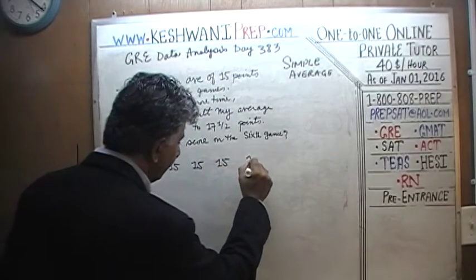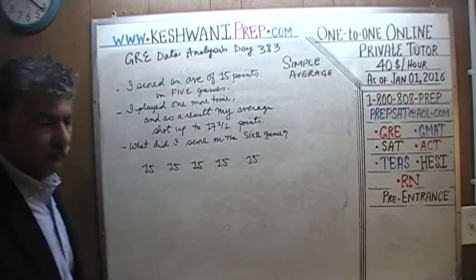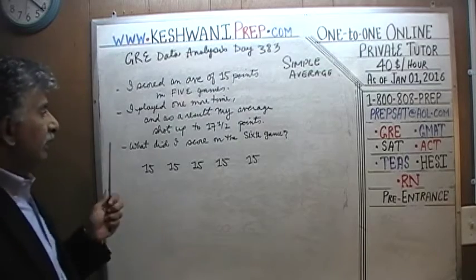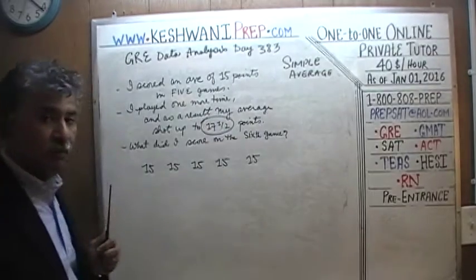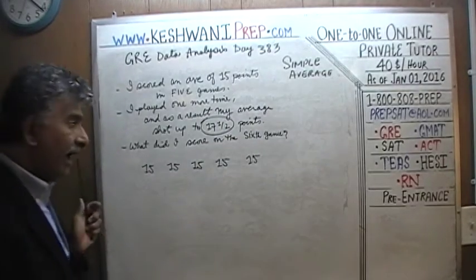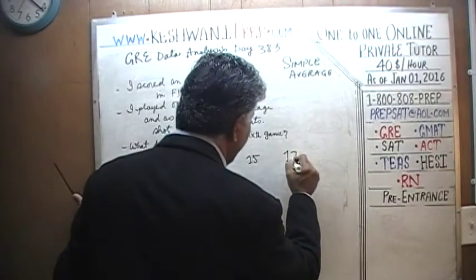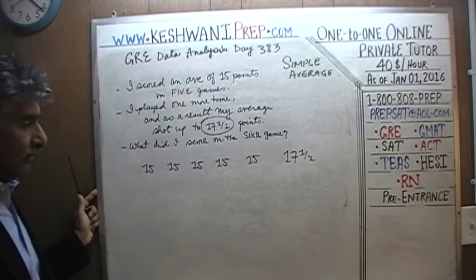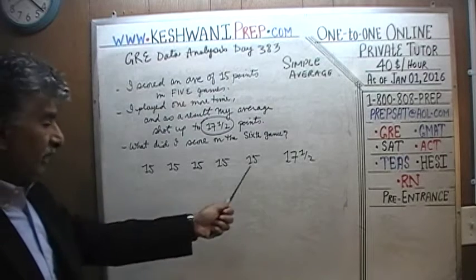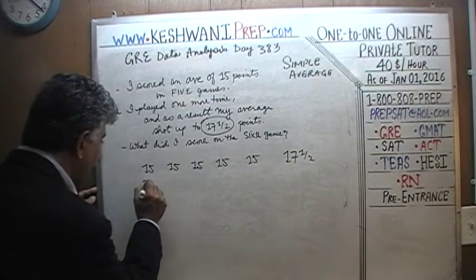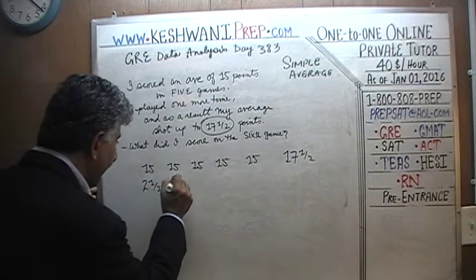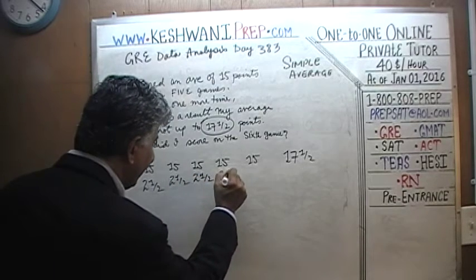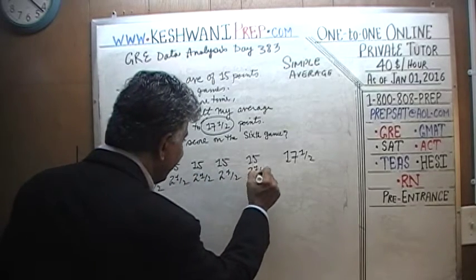So games 1 through 5 each have a score of 15, and of course the average is 15. We want the new overall average to be 17 and a half. Let's pretend he scored 17 and a half in the last game — but that's not enough. We also have to make up the shortfall of two and a half points for each of the five previous games.